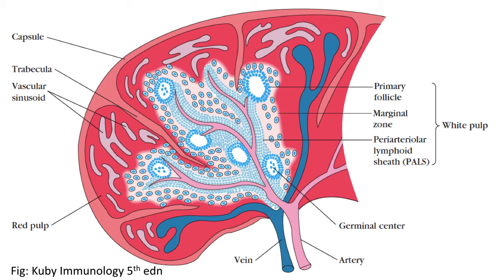Towards the periphery of the PALS and the marginal zone, there are a number of primary follicles present. These primary follicles are aggregates or irregular clusters of B cells. They are present as primary follicles because there is no antigen challenge that has occurred. In addition to the B cells, a few dendritic cells are also present, referred to as follicular dendritic cells.